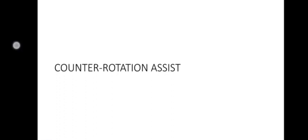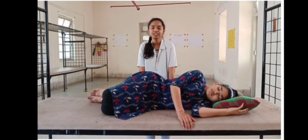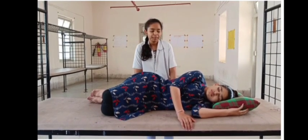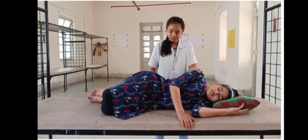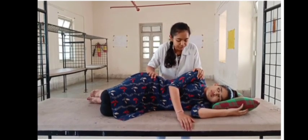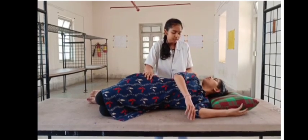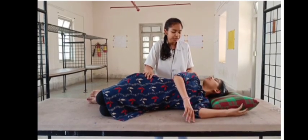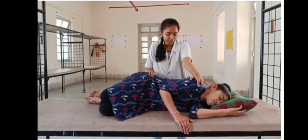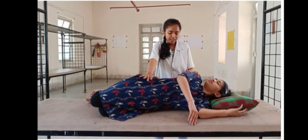Counter Rotation Assist: Patient position is inner sideway position. Place one hand at the shoulder and another hand at the pelvis. Ask the patient to do expiration when you move the shoulder backward, then ask the patient to do expiration when you move the shoulder forward. Continue this position for a few seconds.